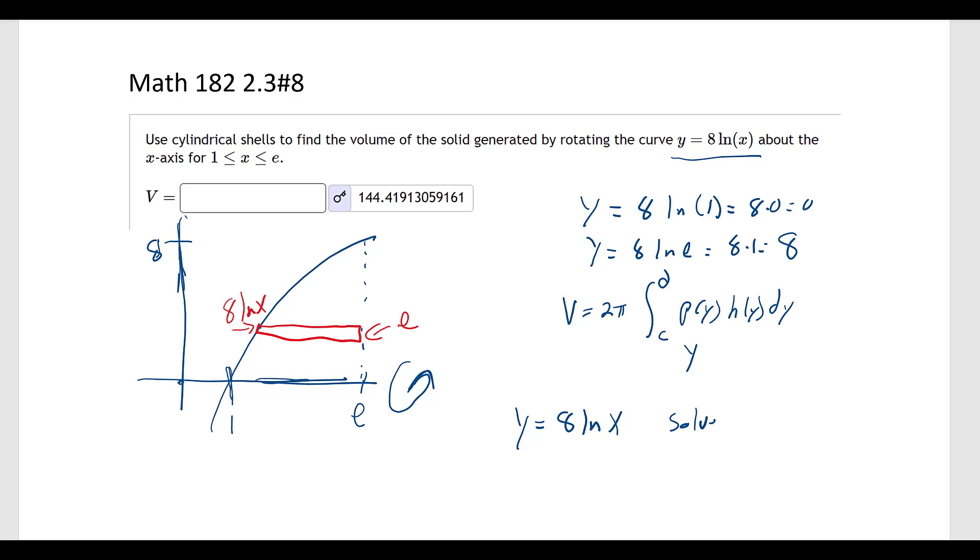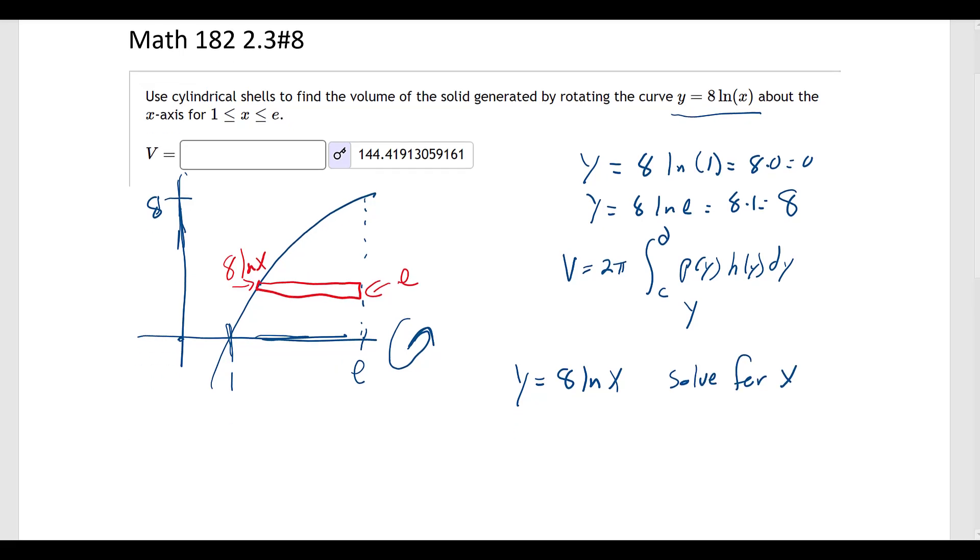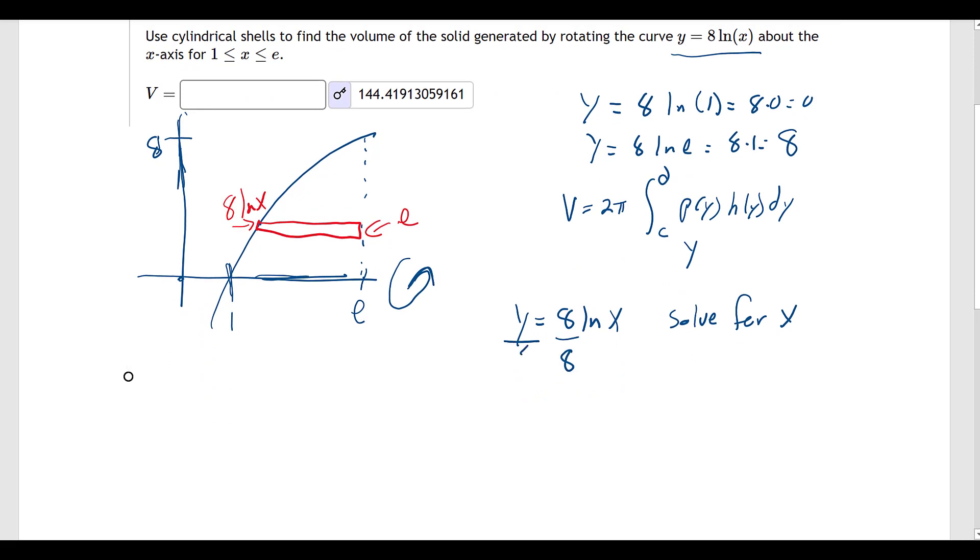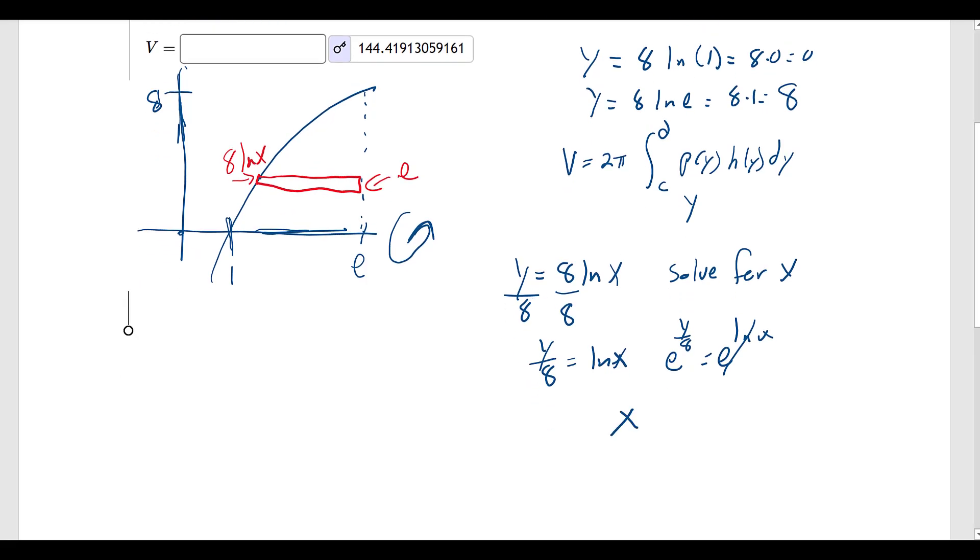If we said that y equals 8 natural log of x, we want to solve for x. So I'll divide by 8. y over 8 equals the natural log of x. And then e to the y over 8 equals e to the natural log of x, that cancels, so x equals e to the y over 8. We could also write this as e to the y divided by 8.